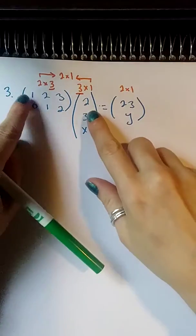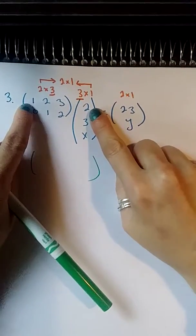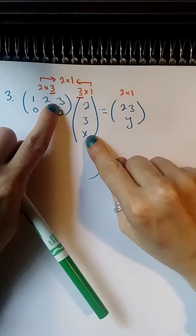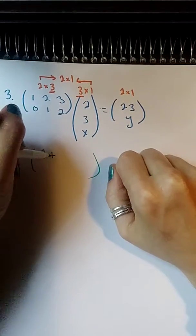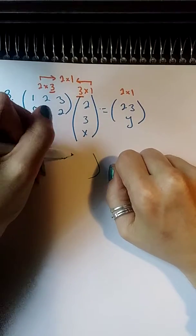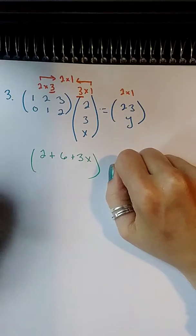Let's go ahead and multiply the matrices on the left together and see what each element inside our new matrix is going to be. So we're going to start here with 1 times 2 plus 2 times 3 plus 3 times x. So 1 times 2 is 2, plus 2 times 3 is 6, plus 3x. I don't know what that is.